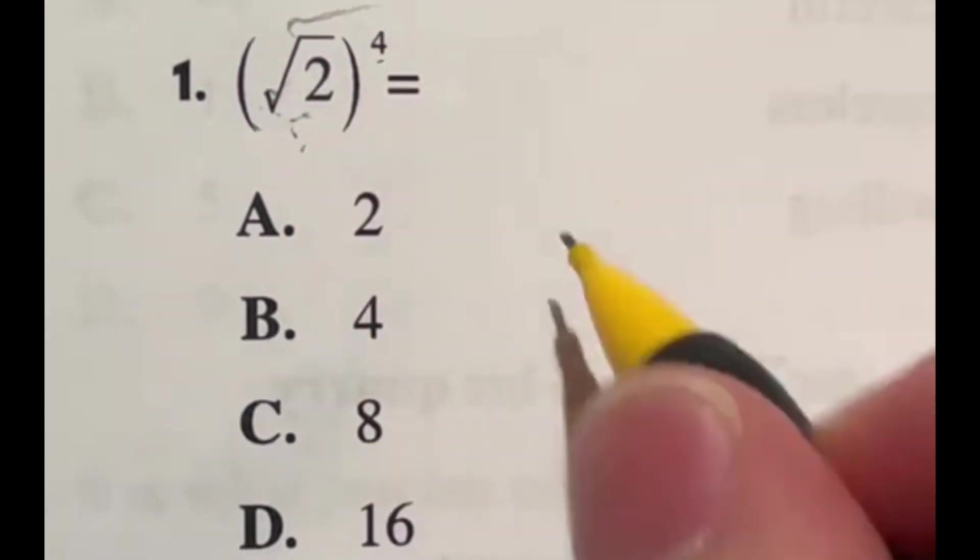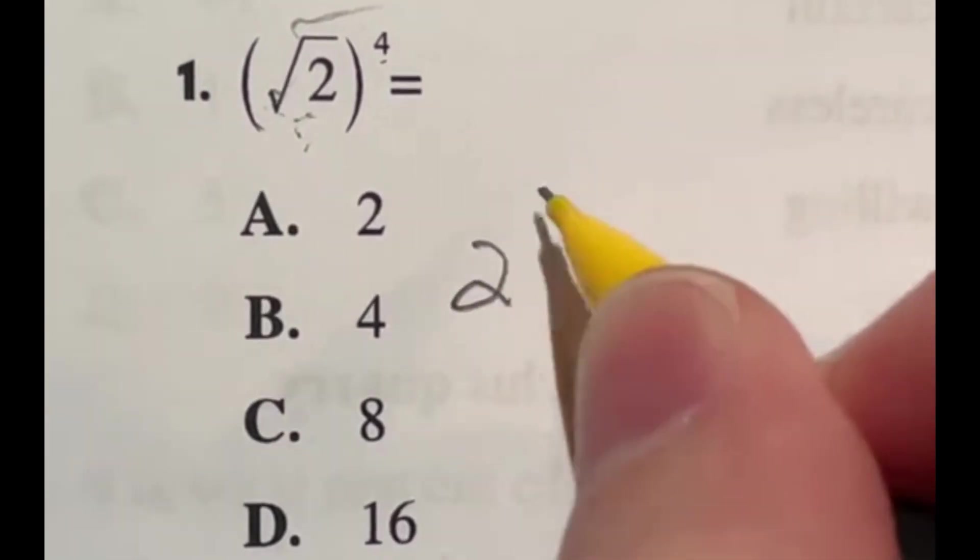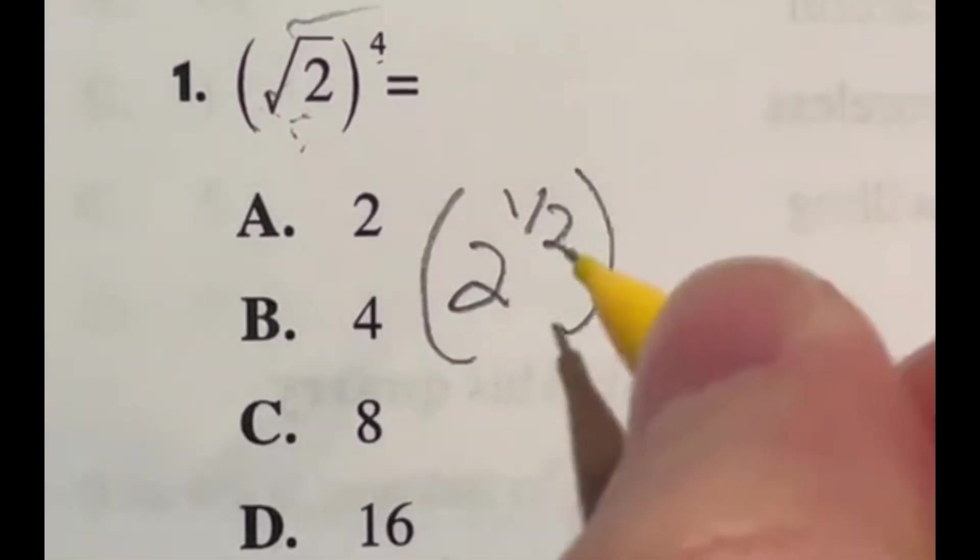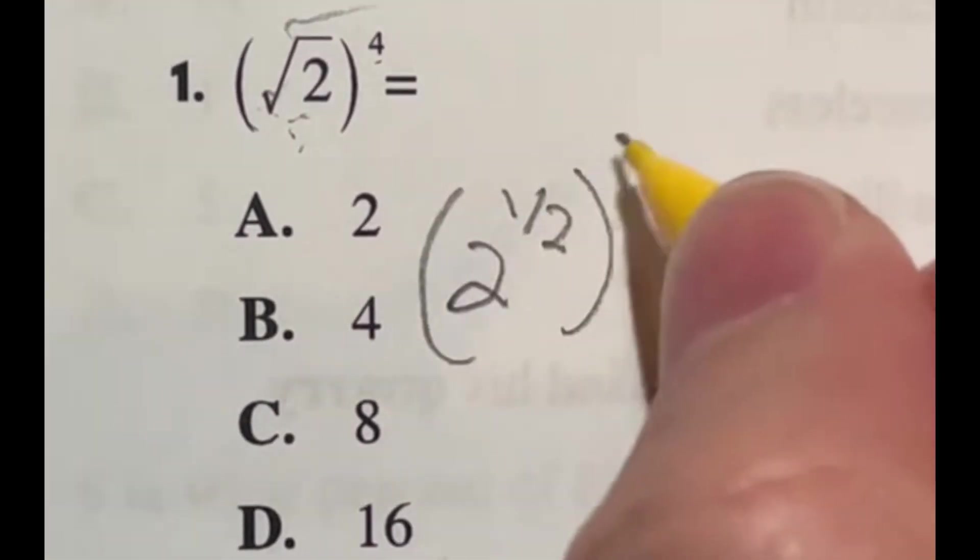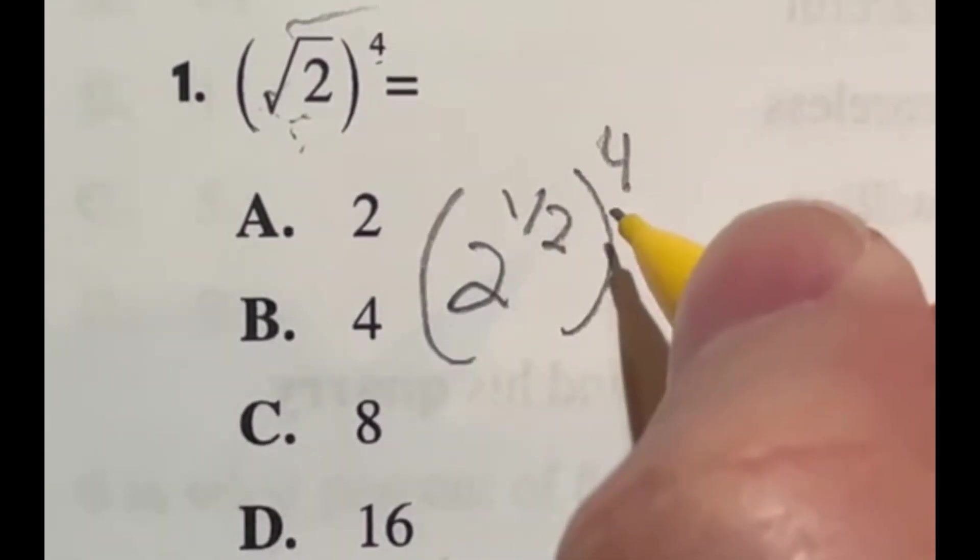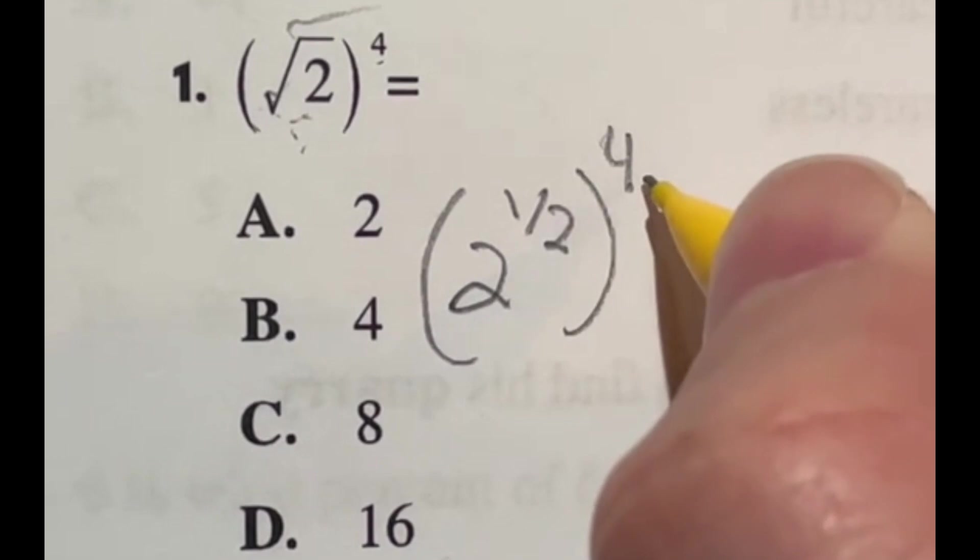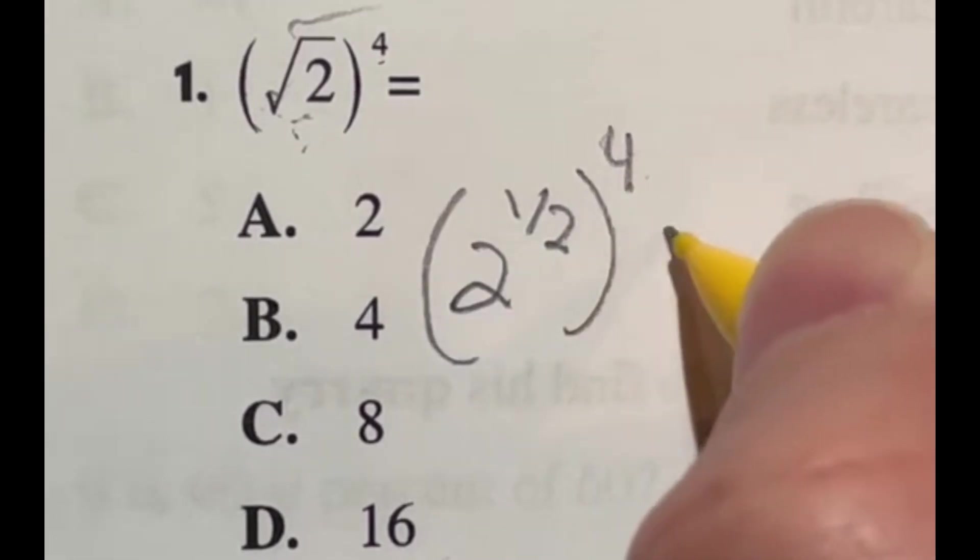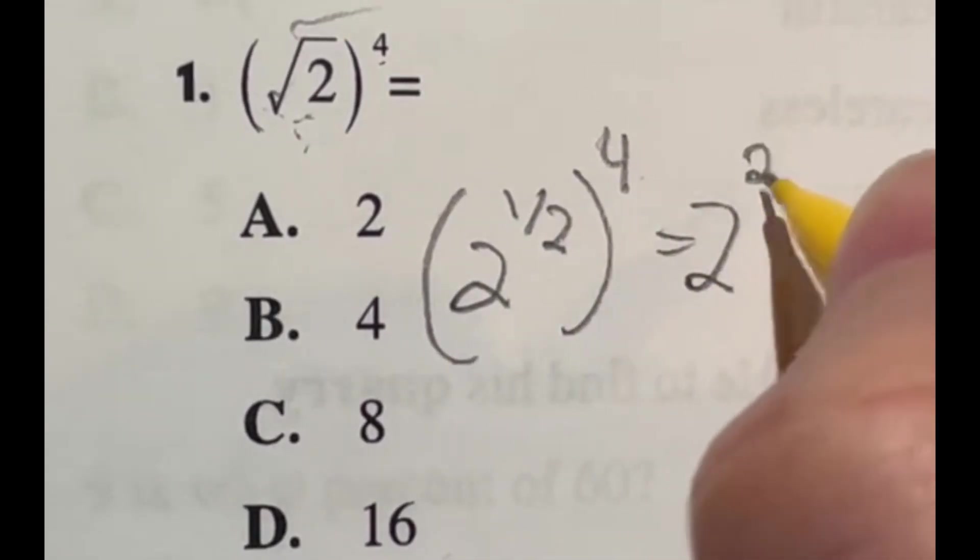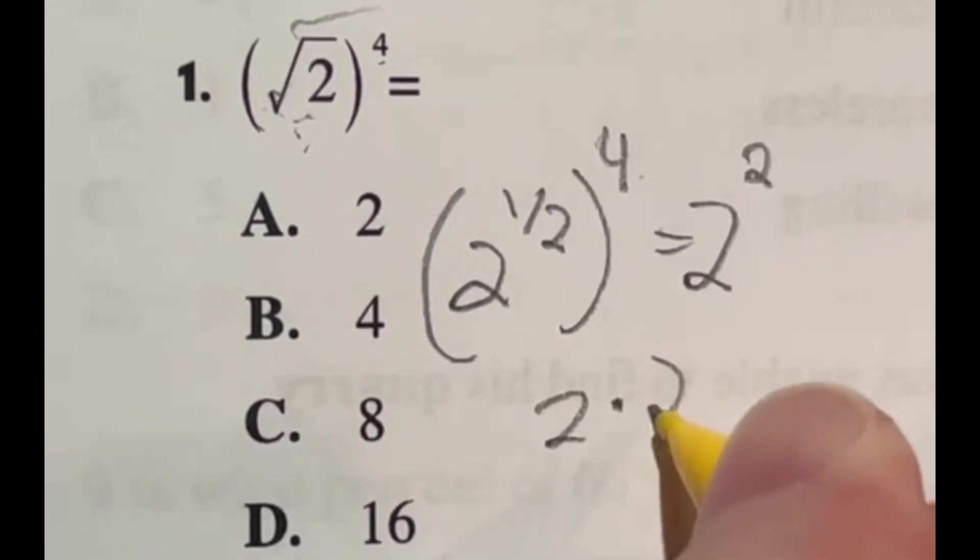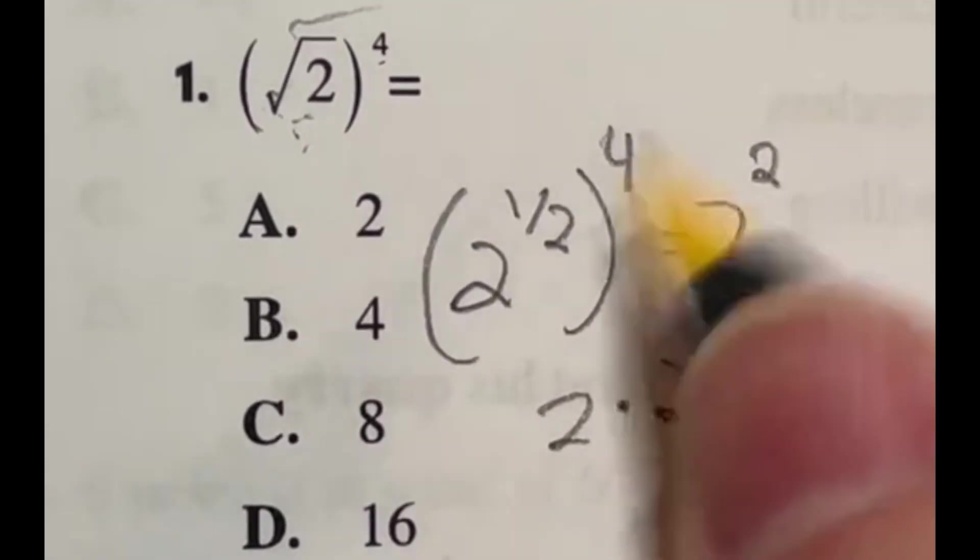The square root of 2 is actually the same thing as saying 2 to the 1 half power. Because that's what the square root is. It's taken to the 1 half power. And then you have that raised to the 4th. Well, there's also a rule that allows you with exponents to go ahead and multiply exponents that are raised to another exponent. So if I do 1 half times the 4, that's where we're going to get that 2 raised to the 2nd power. And 2 squared just means we're doing 2 times 2, which is going to give us 4.